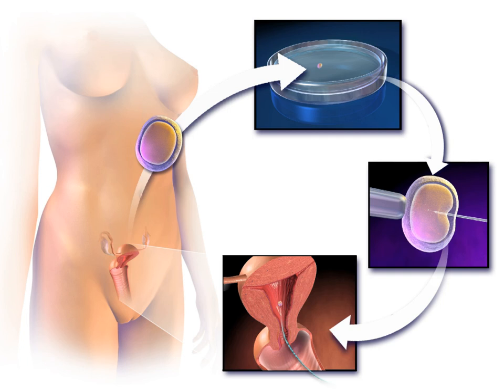Other assisted reproduction techniques include: mitochondrial replacement therapy (MRT), sometimes called mitochondrial donation, which is the replacement of mitochondria in one or more cells to prevent or ameliorate disease. MRT originated as a special form of IVF in which some or all of the future baby's mitochondrial DNA comes from a third party. This technique is used in cases when mothers carry genes for mitochondrial diseases.